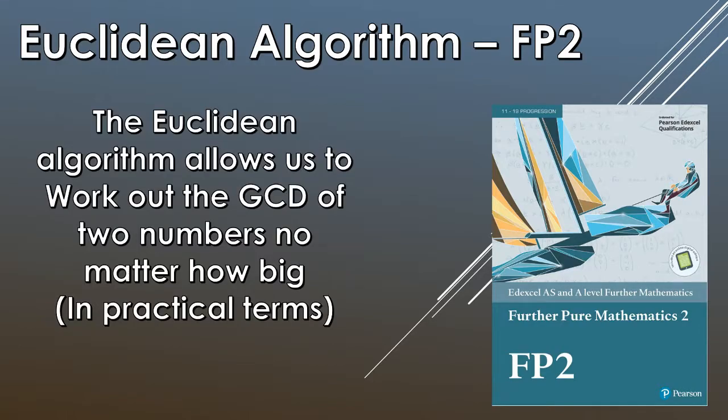So the Euclidean algorithm, what it does is it allows us to look at the GCD or the HCF of two numbers no matter how big. And we say in practical terms because sometimes it might be easier to program a computer to do it but the computer is only going to calculate the GCD using the Euclidean algorithm anyway if you know how to program that.